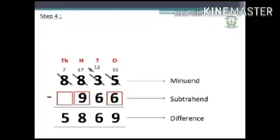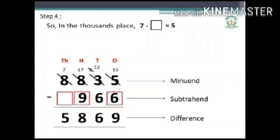Step 4: In the thousands place, 7 minus dash is equal to 5. Since 7 is greater than 5, 7 minus 5 is equal to 2. Write 2 in the thousands missing column. Thus the missing digits are 2, 9, and 6.